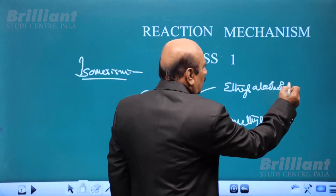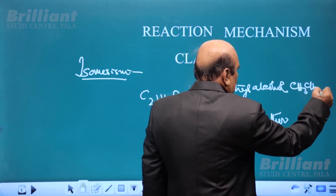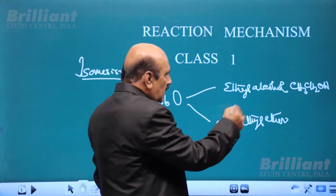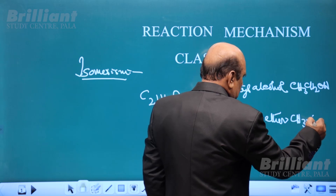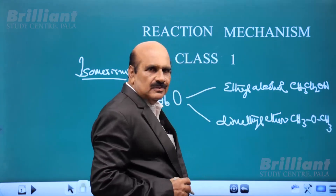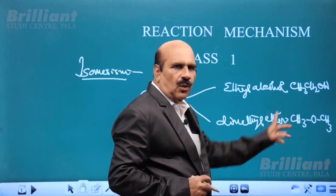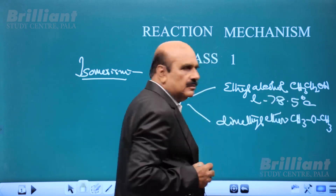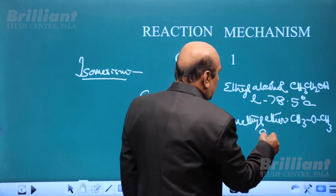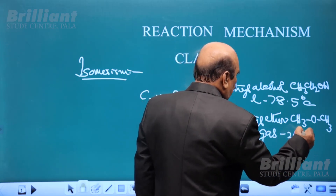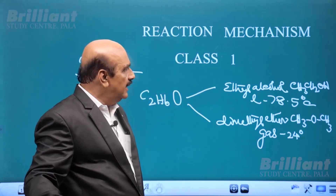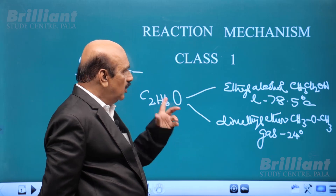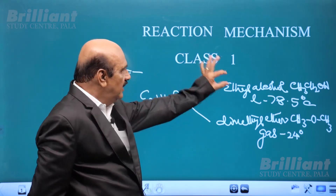Ethyl alcohol has the structure CH3CH2OH, that is C2H6O, and dimethyl ether has the structure CH3OCH3, which also has the molecular formula C2H6O. Ethyl alcohol is a liquid having boiling point 78.5 degrees, whereas dimethyl ether is a gas having a boiling point of minus 24 degrees. So these two compounds are entirely different in physical and chemical properties, but have the same molecular formula.